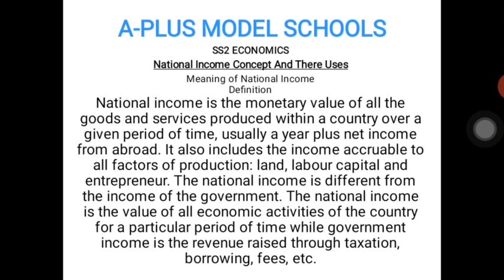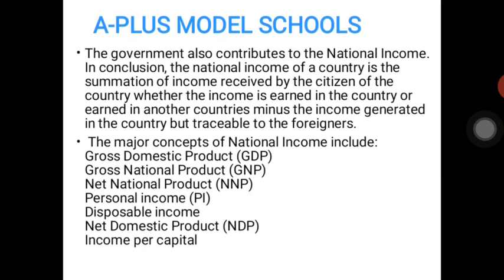The major source of government revenue is taxation. Government income is the revenue derived from taxation, borrowing, fees, and even grants from other countries or external bodies. But national income is the monetary value of all economic activity. Please take note — the two are different.